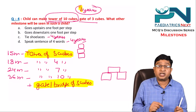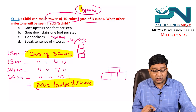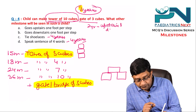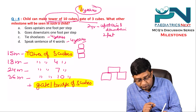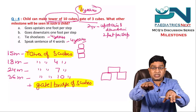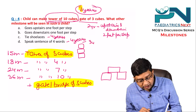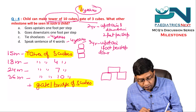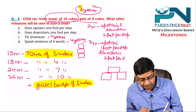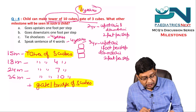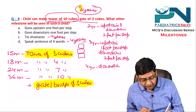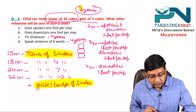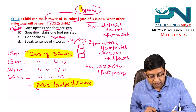At two years a child goes upstairs and downstairs both two feet per step. At three years, the child can go upstairs one foot per step, but downstairs remains two feet per step. At four years, downstairs also becomes one foot per step. Since we are asking what a three-year-old can do, the correct answer is goes upstairs one foot per step.